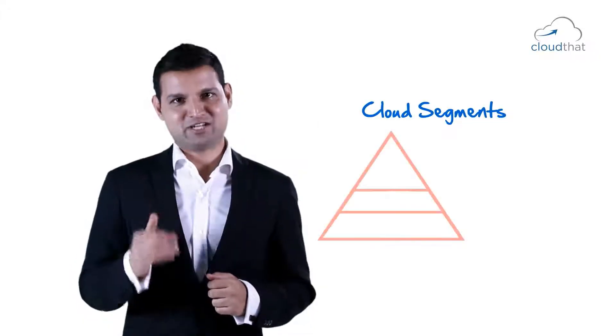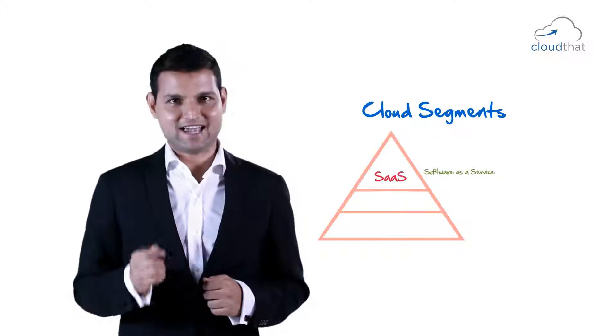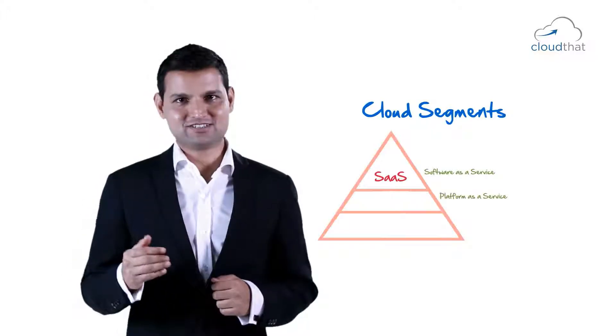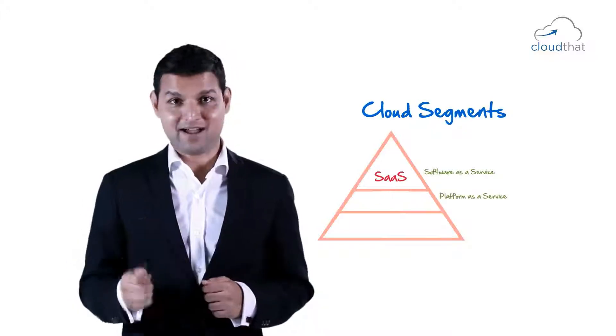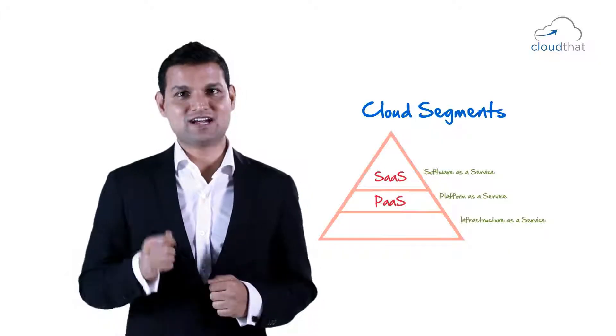We are now going to understand the features, differences, similarities, advantages and disadvantages of different cloud segments. There are three main cloud segments: Software as a Service, pronounced SaaS; Platform as a Service, pronounced PaaS; and Infrastructure as a Service, pronounced IaaS.